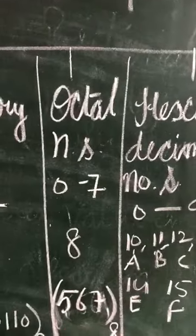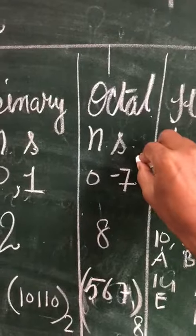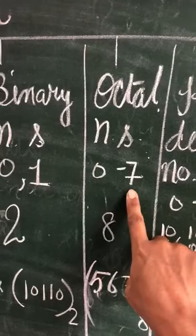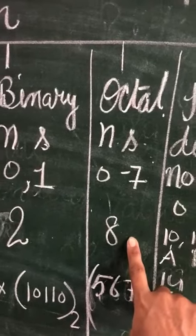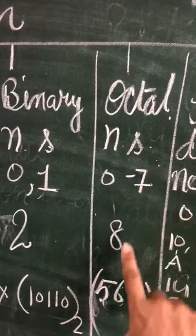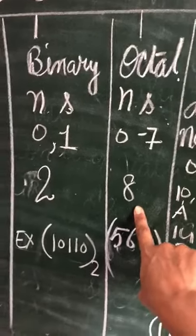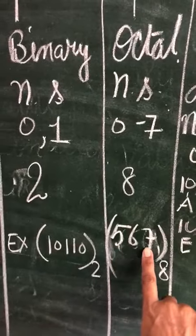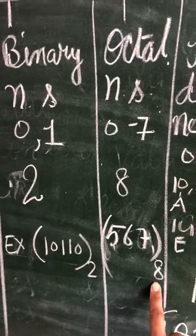Moving to the third one, the octal number system. The octal number system has 0 to 7 digits, meaning a total of 8 digits. The base value of the octal number system is 8. Here, one example is 567, denoting an octal number value.